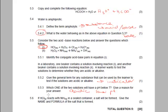And it says, if HCl reacts with NH₃ in a sealed container, a salt is formed. Give the name and formula of that salt. So they're saying ammonia reacts with HCl. And they want to know what the salt is. And the salt is ammonium chloride, NH₄Cl.